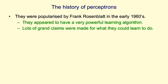Now, some of those claims turned out to be false. In the case of the tanks and the trucks, it turned out the pictures of the tanks were taken on a sunny day, and the pictures of the trucks were taken on a cloudy day, and all the perceptron was doing was measuring the total intensity of all the pixels. That's something that we humans are fairly insensitive to — we notice the things in the picture — but a perceptron can easily learn to add up the total intensity. That's the kind of thing that gives an algorithm a bad name.